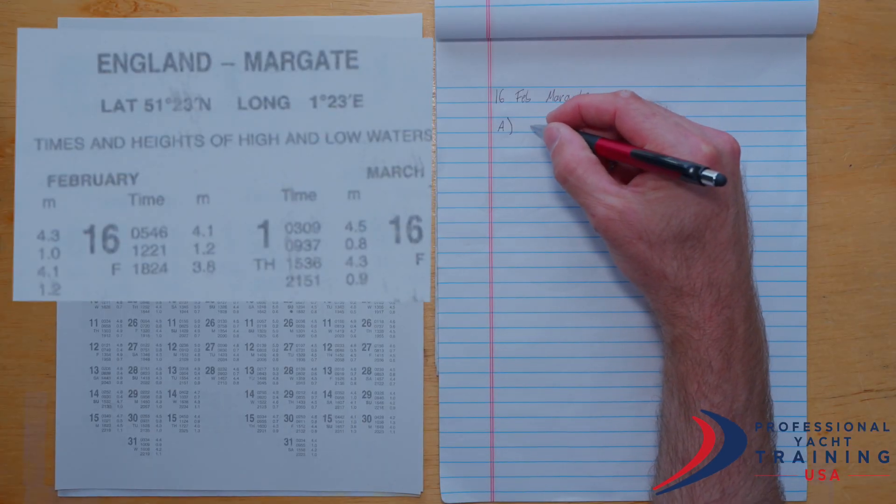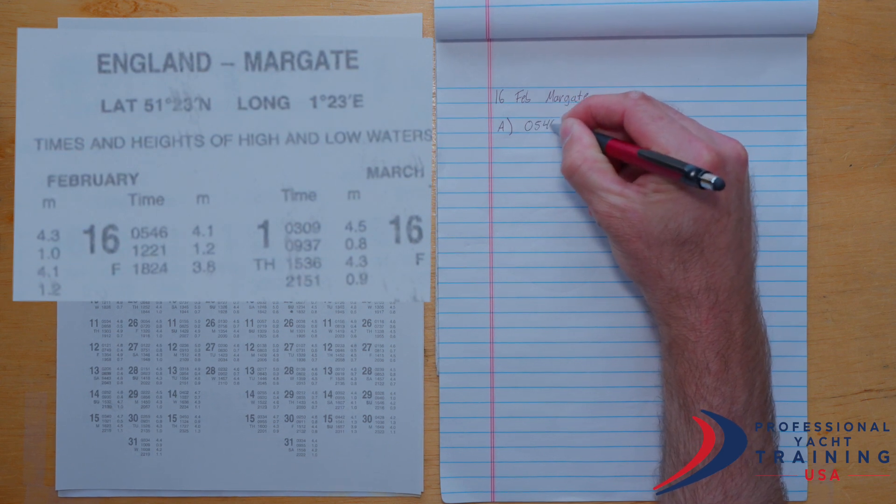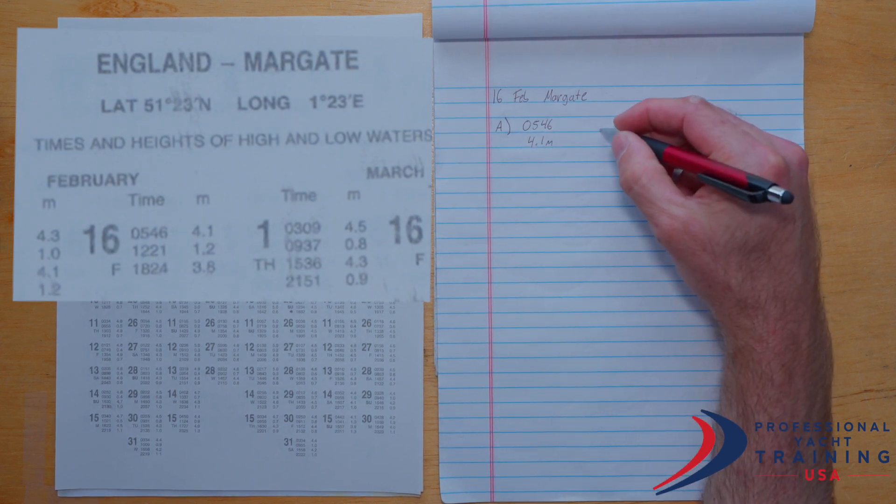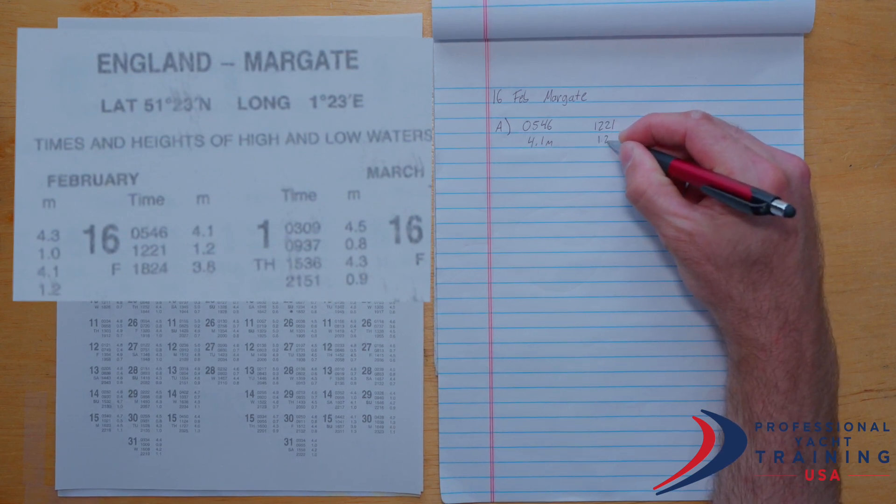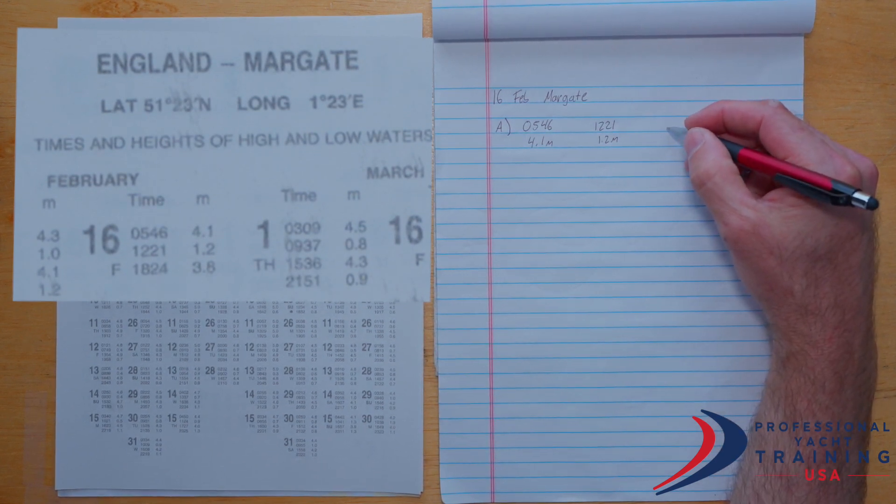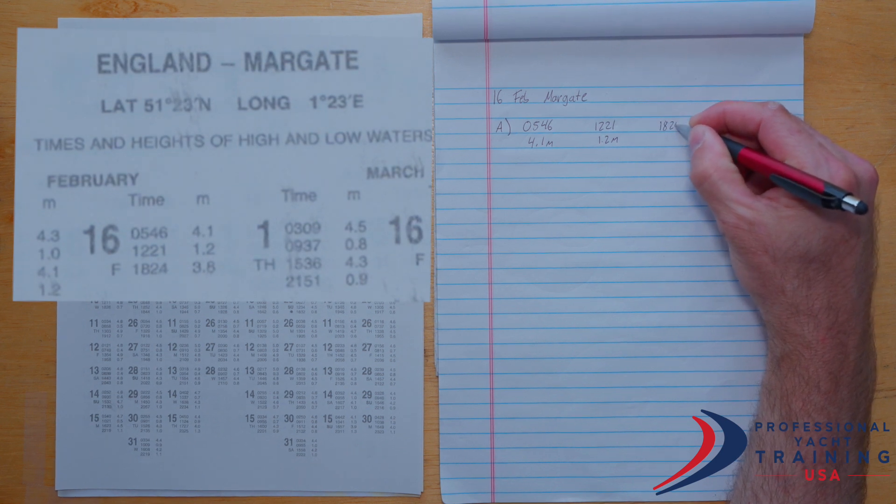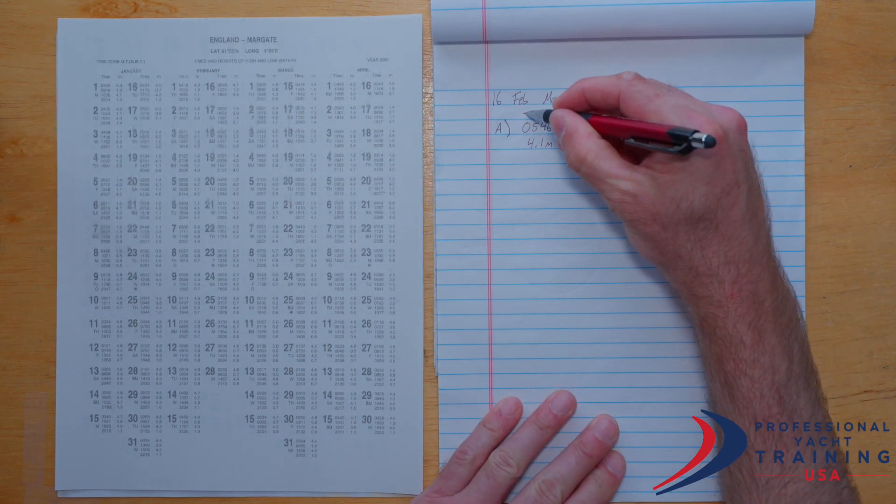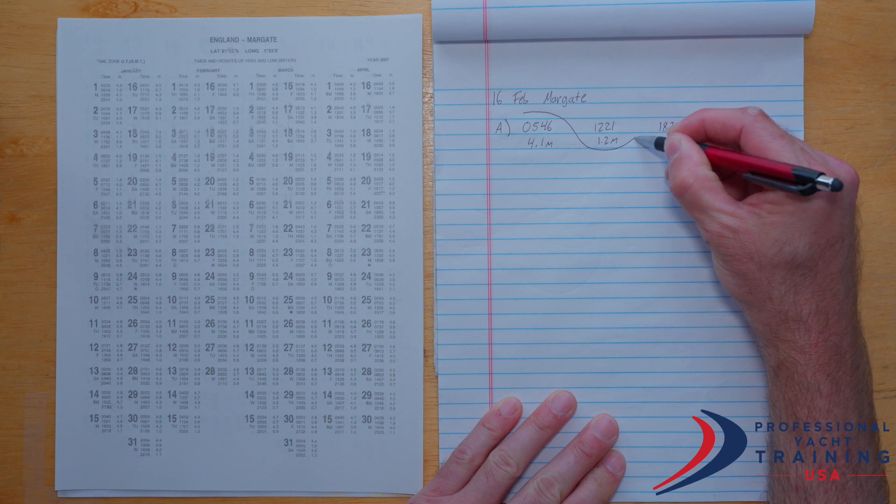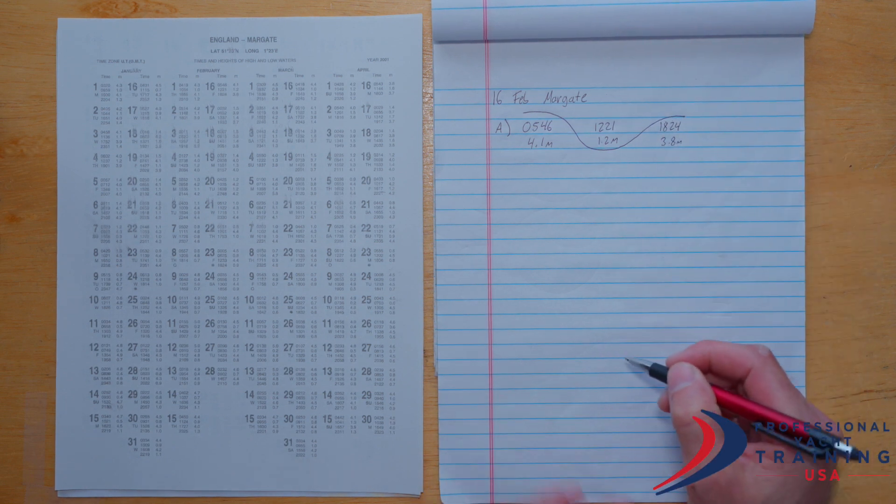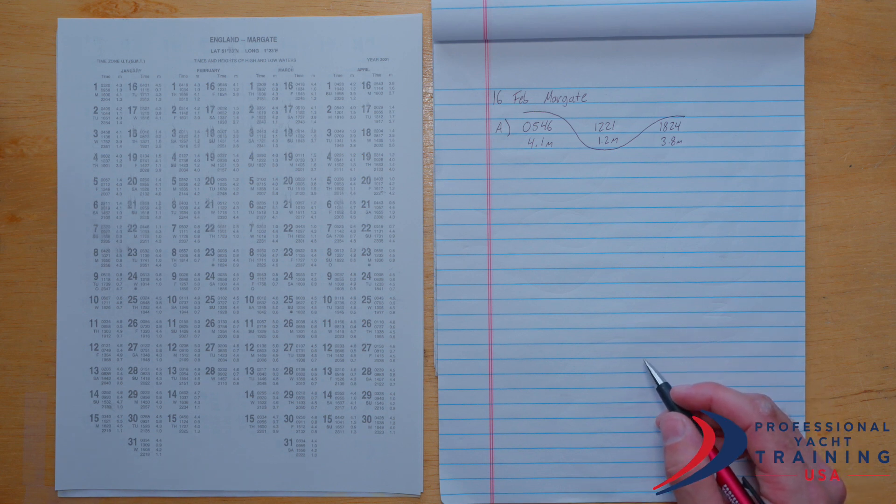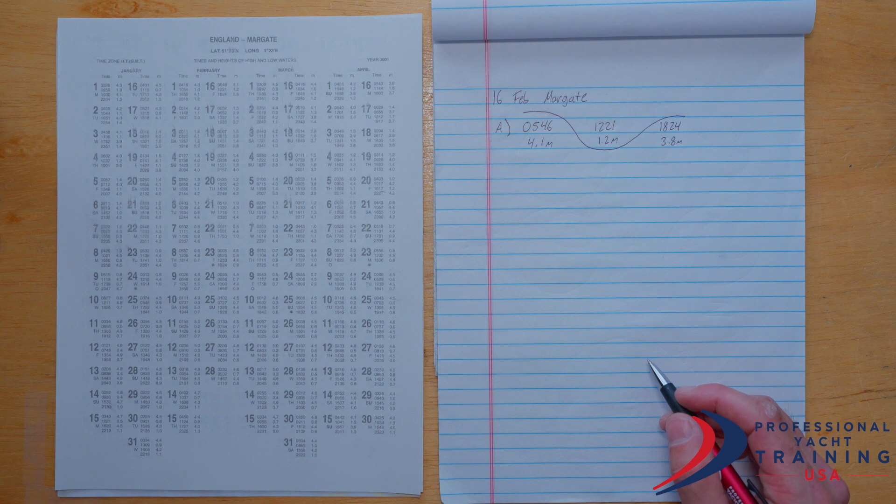So on the 16th of February, which is a Friday, there is a high tide at 0546 in the morning and the tidal height is 4.1 meters. There's a low tide at 1221, tidal height is 1.2 meters. And there's a high tide at 1824 in the evening at 3.8 meters. I like to go ahead and give my tidal data this symbol just to remind me what's a high tide, what's a low tide and where the ebbs and floods fall within them.